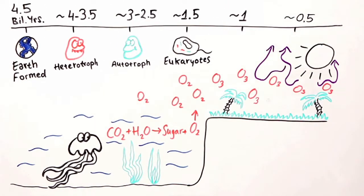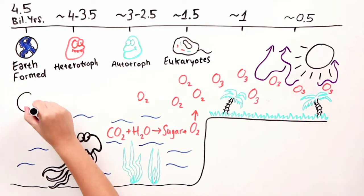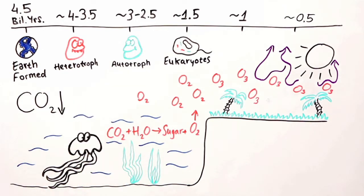One of the ways we see this happening is through the huge reduction in the amount of CO2 present in the atmosphere at this time. As plants left the oceans and colonized land, more and more photosynthesis led to a reduction in CO2 levels and an increase in atmospheric oxygen. But as plants left the oceans and got onto dry land, how did this affect plant evolution?